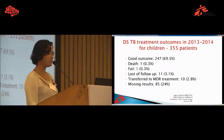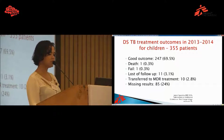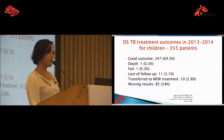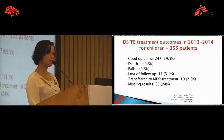About outcomes, we have data from 2013 to 2014, because when we were conducting this research, many patients started in 2015 had not yet completed their treatment regimen. Our outcome data covers drug-sensitive patients from 2013 to 2014, totaling 355 patients. Of those, 69.5% had a good outcome — meaning treatment completed, and in most cases cured. We had one patient who died and one who was a treatment failure. 3% were lost to follow-up, another 3% were transferred to MDR treatment regimens, and 24% had missing outcome data.